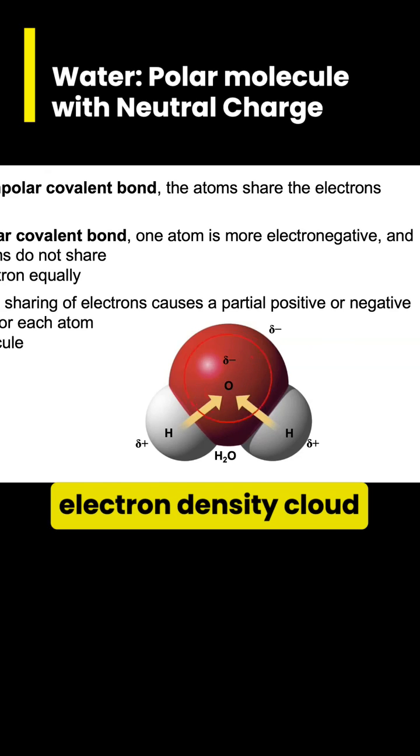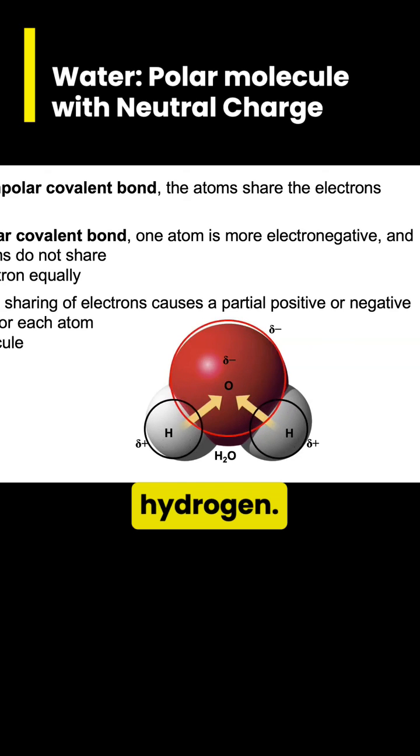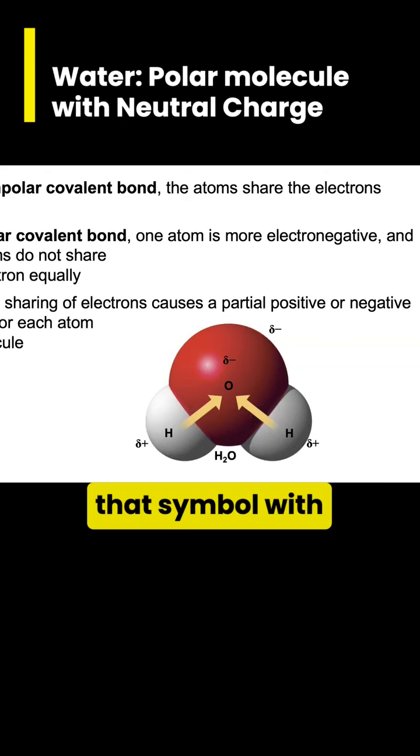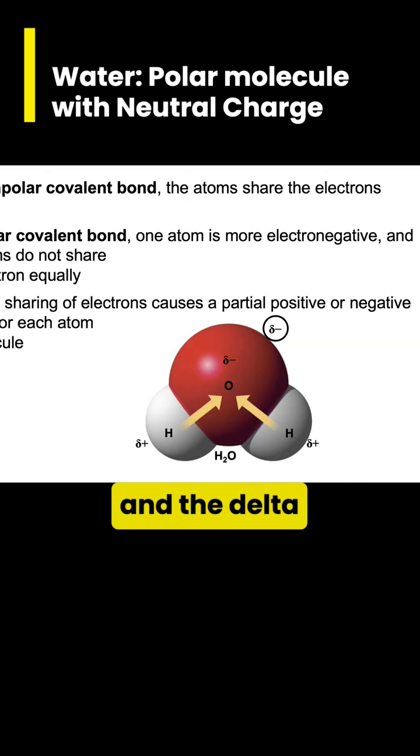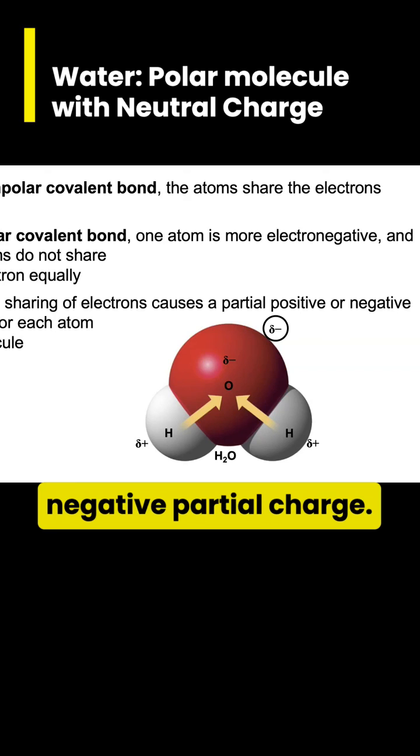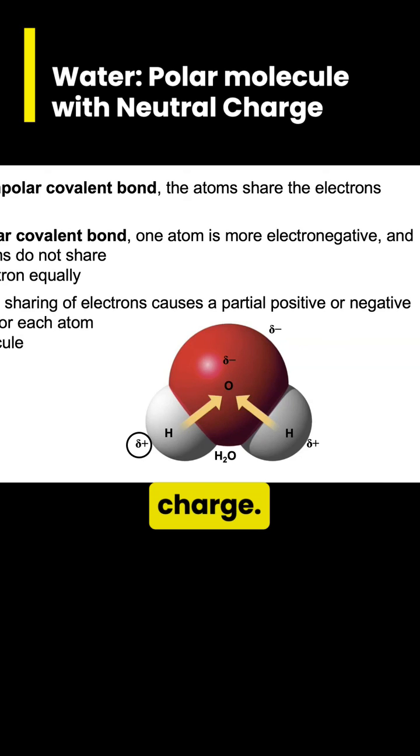A larger electron density cloud surrounds oxygen than the hydrogen. This is also why oxygen has that symbol with a negative sign next to it. That symbol is the lowercase Greek letter delta, and the delta minus represents a negative partial charge. The delta positive near the hydrogens represents a positive partial charge.